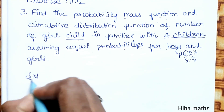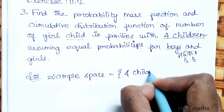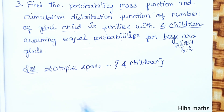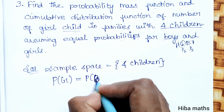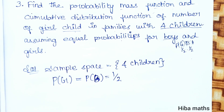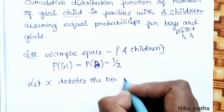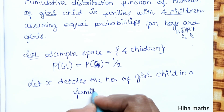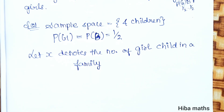Now, for the solution, let's look at the sample space. In a family with 4 children, how many girls are possible? The number of girls X can take values 0, 1, 2, 3, or 4.